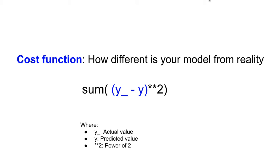Mathematically, the cost function is defined as the sum of the squares of the difference between the actual and predicted values. The reason why we square the difference is because sometimes the actual values can be greater than the predicted values and vice versa. So the best model is the one that has the minimum cost. In our example, we are going to choose the linear regression model.